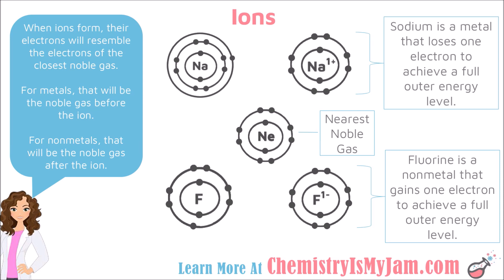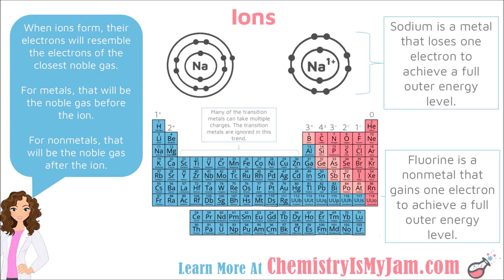The periodic table is also a useful tool for understanding how the electrons in an ion look. When ions form, their electrons will resemble those of the closest noble gas. For metals, that will be the noble gas before that element on the periodic table. Consider sodium — when it becomes an ion, it will look like neon. Neon is element 10, sodium is element 11, making neon the closest noble gas to sodium.